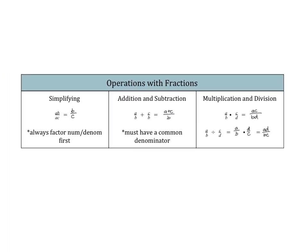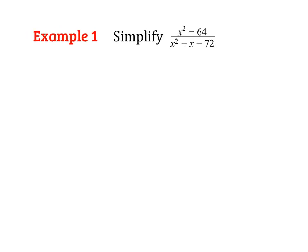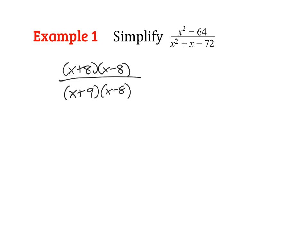Now we're going to try using these same rules with our rational expressions. Here we're just simplifying — notice in all these examples there will be no equal sign; we're not solving, we're simply simplifying and performing operations. So let's start by factoring. In the numerator, we can use difference of two squares, and in the denominator we can factor that trinomial pretty easily. Now our job is to look for common factors. There is a common factor of X minus 8, so those will cancel out, and we are left with X plus 8 over X plus 9.